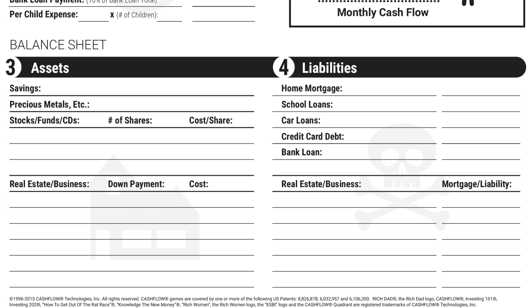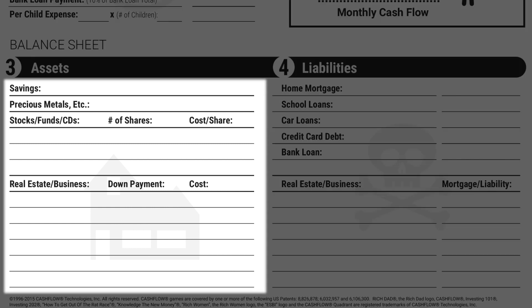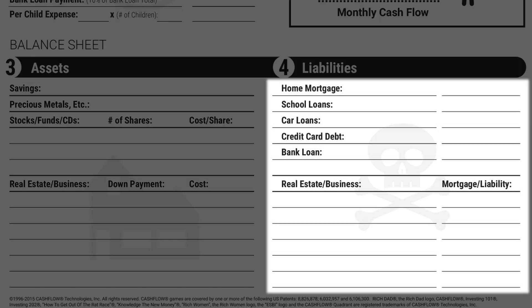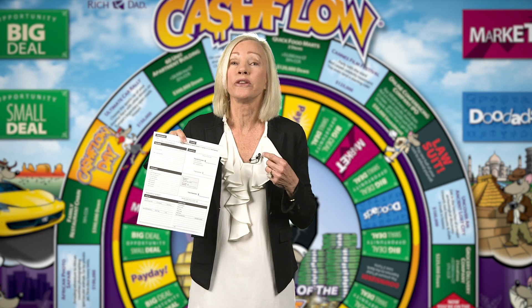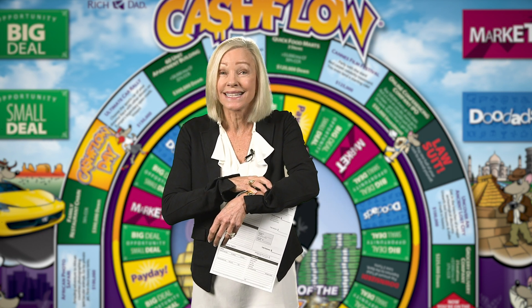Then there is the balance sheet, which is just a snapshot in time. A balance sheet tells you what assets you have and what liabilities you have. According to the world of Rich Dad, an asset is something that puts money in your pocket whether you work or not. So my watch here — a banker would say it's an asset, but Rich Dad says no, it's not an asset unless I sell it. Rental properties, stocks, dividends, businesses that throw off cash flow — those are assets, and they get recorded in your balance sheet.